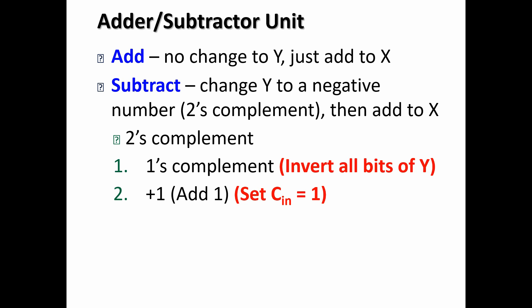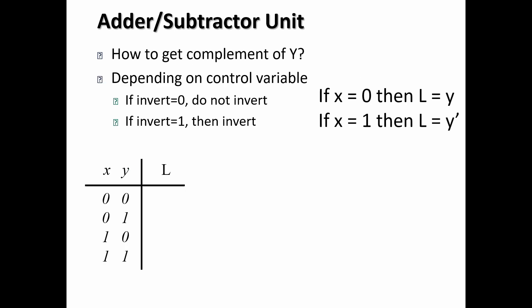How do we get the 1's complement? Remember from another video, we invert each of the bits of that Y. So how do we get the complement of a variable? So depending on a control variable, we're going to get the complement or not. So we need to be able to get the complement or do not get the complement.